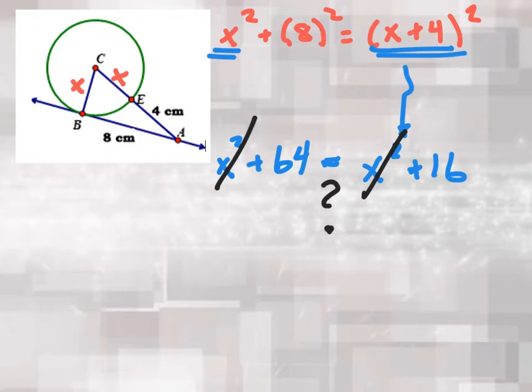So what do you do from there? Well, I'll tell you. When you set that up and you get x squared plus 8 squared equals (x plus 4) squared, you've got to know how to multiply these two binomials.